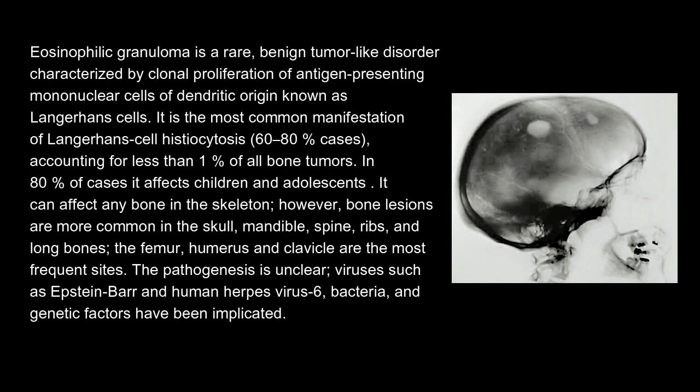In 80 percent of cases it affects children and adolescents. It can affect any bone in the skeleton; however, bone lesions are more common in the skull, mandible, spine, ribs, and long bones. The femur, humerus, and clavicle are the most frequent sites. The pathogenesis is unclear; viruses such as Epstein-Barr and human herpes virus 6, bacteria, and genetic factors have been implicated.